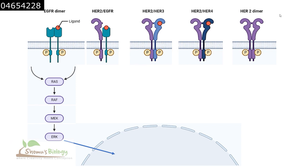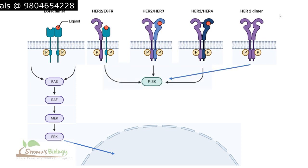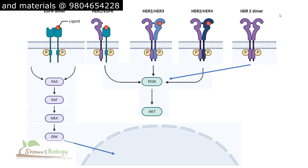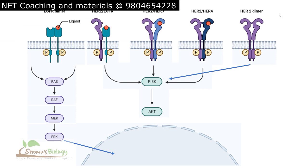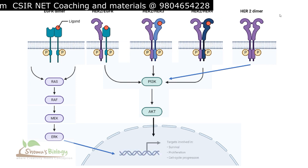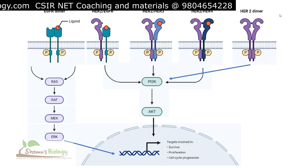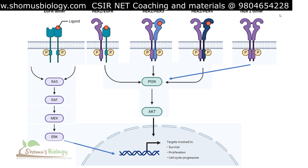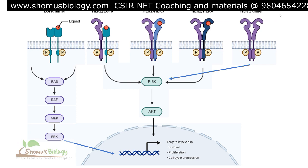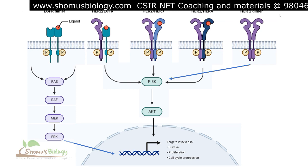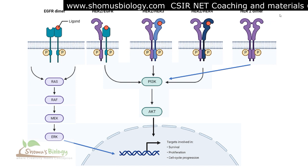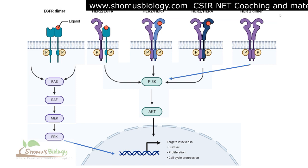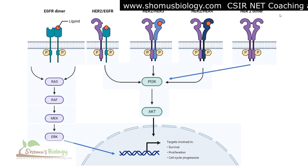All HER2/EGFR, HER2/HER3, HER2/HER4, and HER2 homodimer combinations signal through the phosphorylated cytosolic domain to activate PI3K. This kinase activates AKT, and AKT further activates mTOR and other proteins, leading to transcription of specific genes in the nucleus involved in survival, proliferation, and cell cycle progression. Overactivation of this pathway leads to excessive cell growth, turning a normal cell into a tumor cell, which can become cancerous with additional mutations.